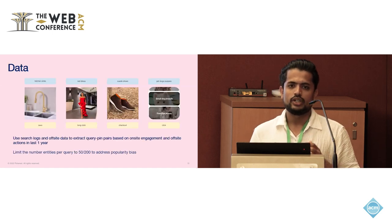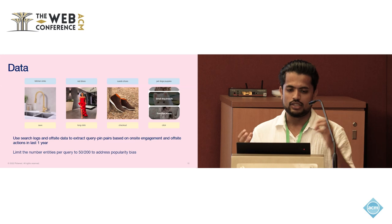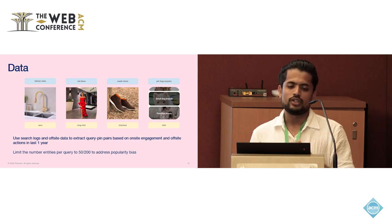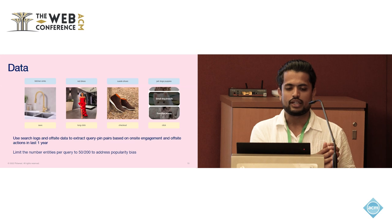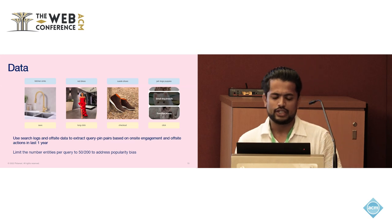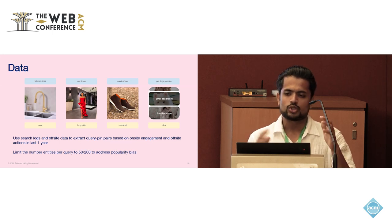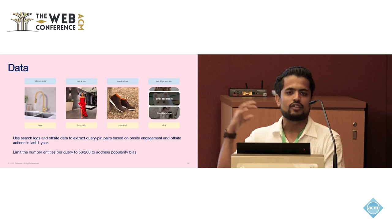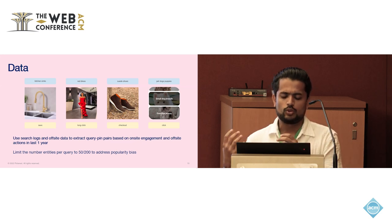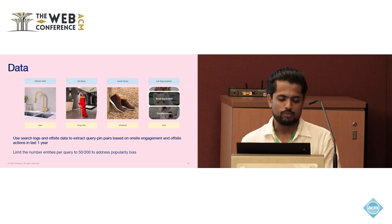The main component of any embedding model is the data. We use paired pin and query data to learn similarities and build semantic structure. We use one year of query logs for both on-site and off-site engagement to train our model, with around a billion-scale dataset. To normalize the data and address query popularity following Zipf's law — where some queries have high volume and others form a long tail — we limit the number of rows per query to 50 or 200 depending on the engagement for that particular content type.